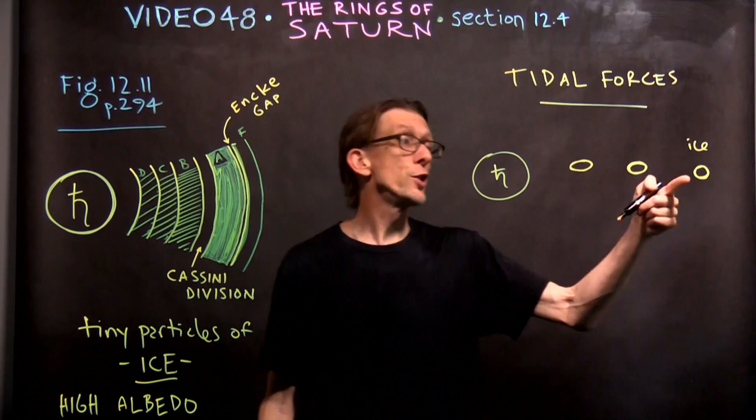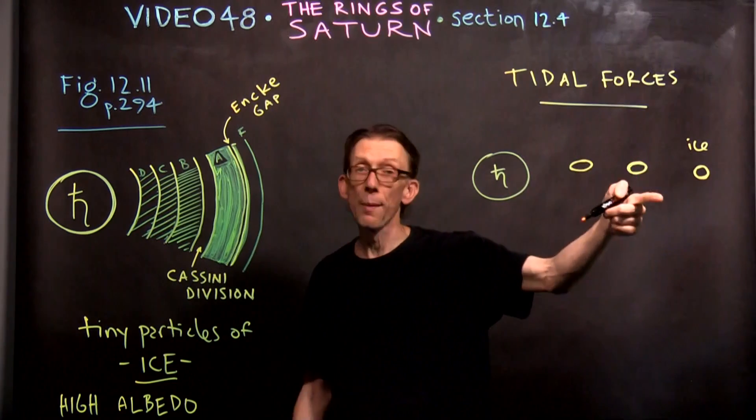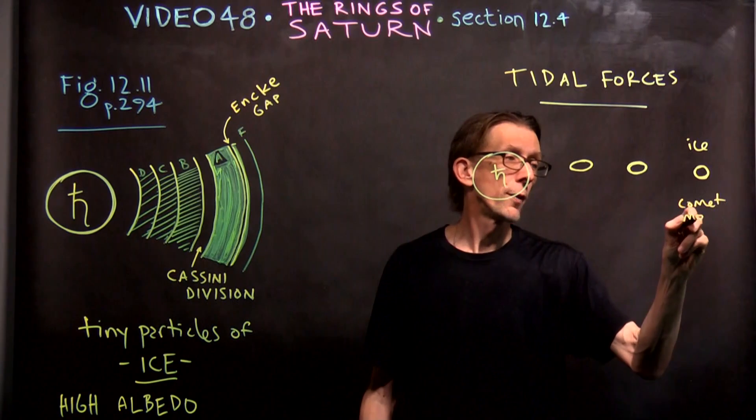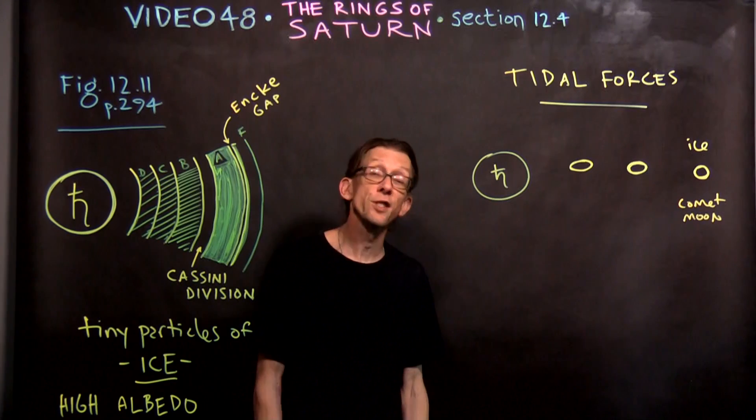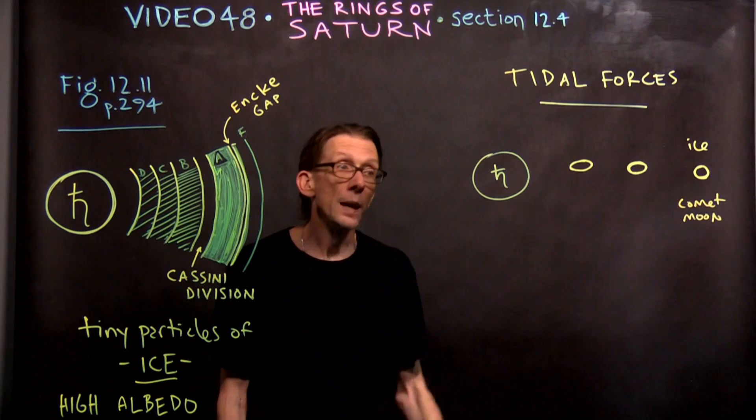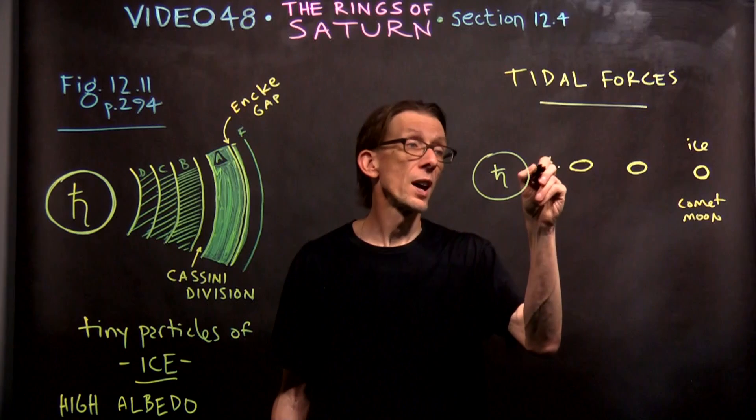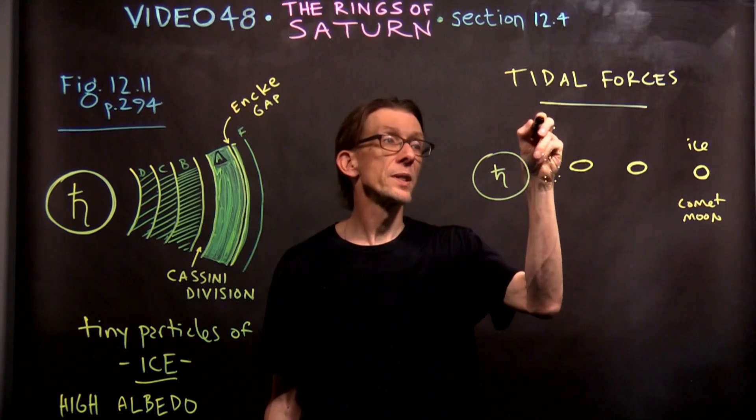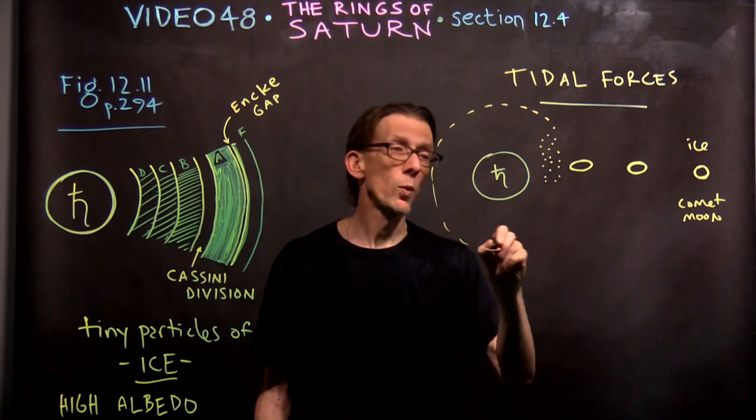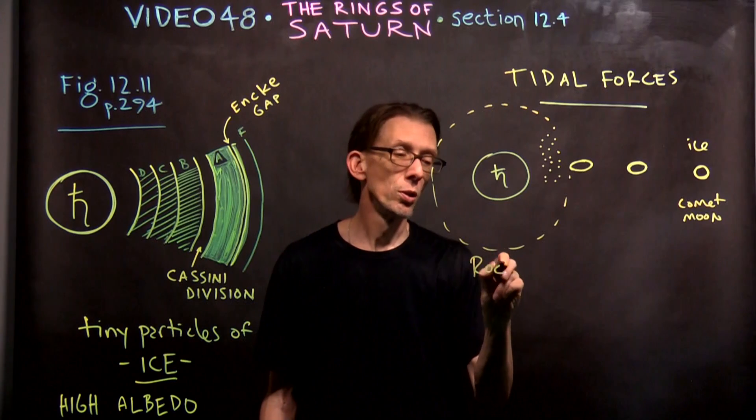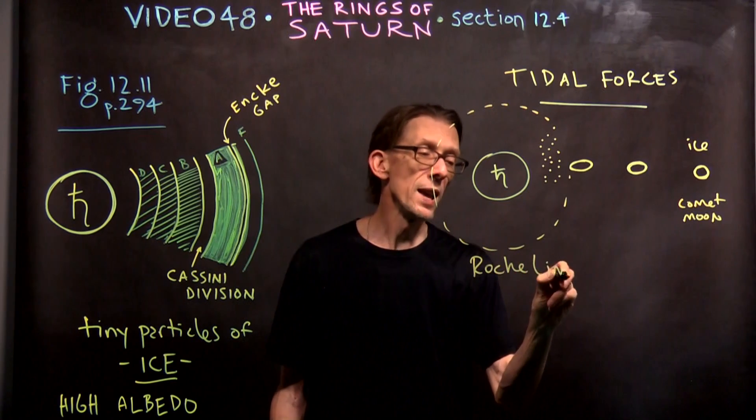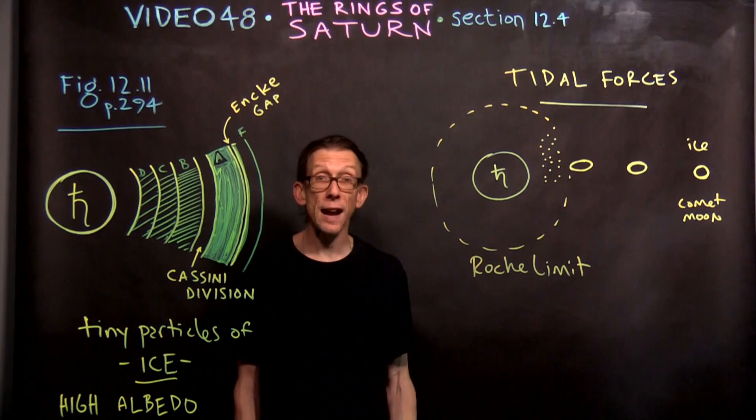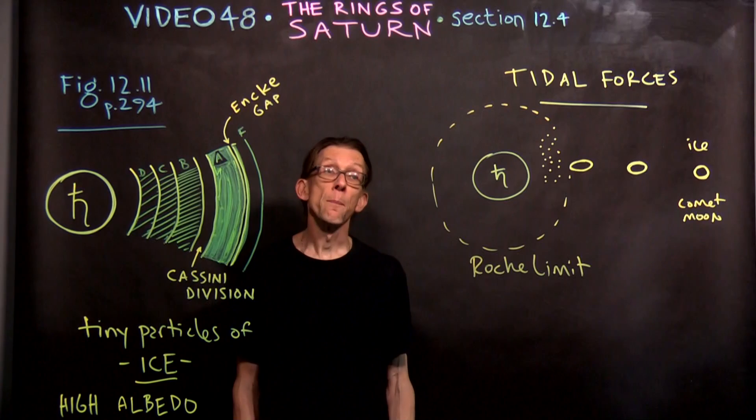At some point, as you bring this ice moon in or this comet, whatever, it could be a comet or a moon, as you bring it closer in, eventually it's going to shatter and break up into a thousand tiny little pieces, actually more like billions of tiny little pieces. The point at which that happens is a limit surrounding the planet known as the Roche limit. Within the Roche limit, a moon or a comet cannot exist without being fractured and shredded by tidal forces.